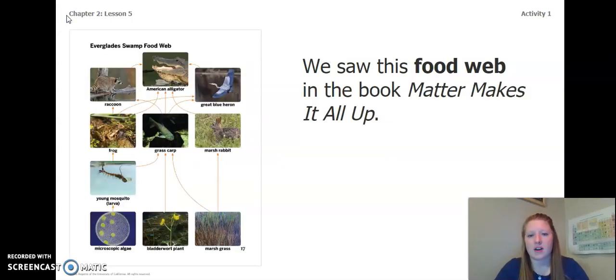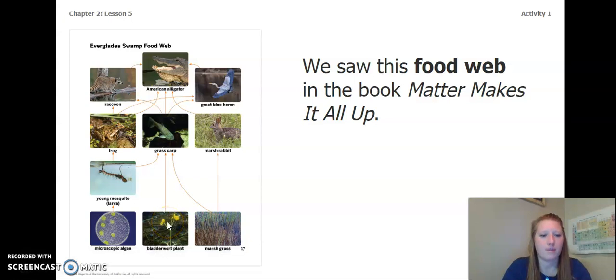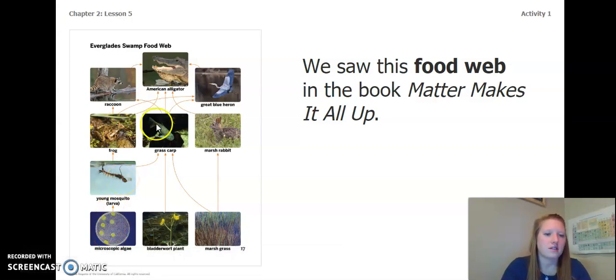When we read Matter Makes It All Up, we saw this food web. It is an Everglades Swamp food web. So you can see at the bottom, we have marsh grass, bladderwort plant, and microscopic algae. As we move up, we have young mosquito, frogs, grass carp, marsh rabbit, blue heron, American alligator, and a raccoon.